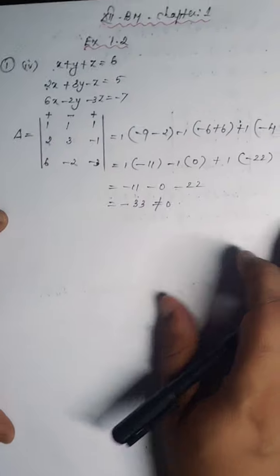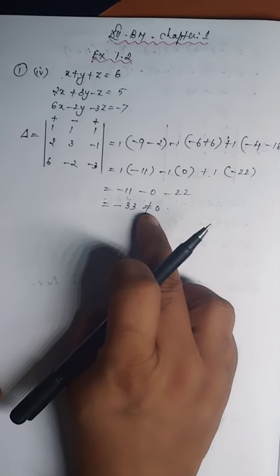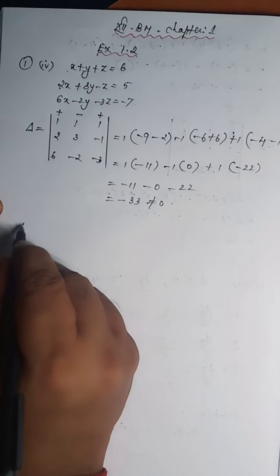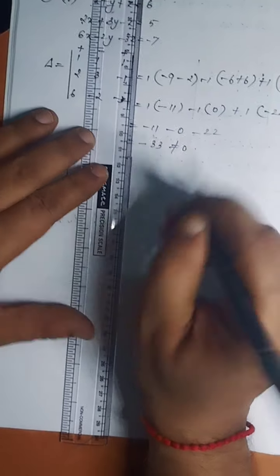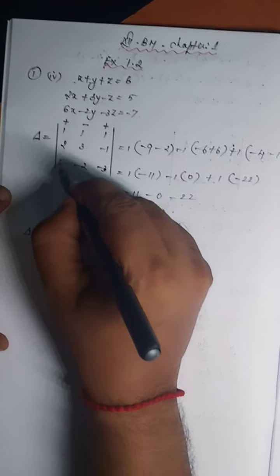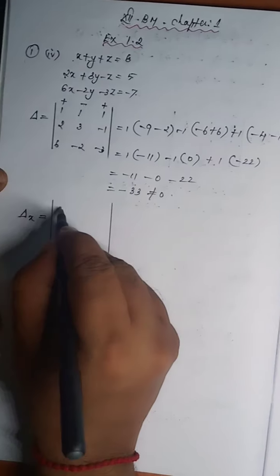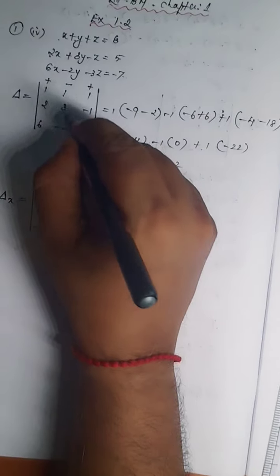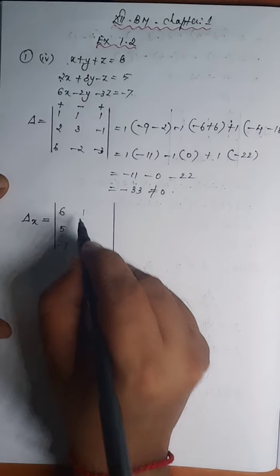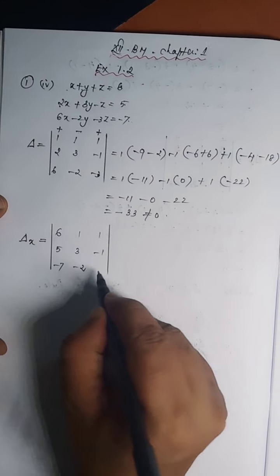So together: minus 11 minus 0 minus 22 equals minus 33, which is not equal to 0. We can solve this system by determinant method because the delta value is not equal to 0. Now we can find del x. Del x is also a 3 by 3 minor. The first column of delta should be replaced by the constants 6, 5, and minus 7.